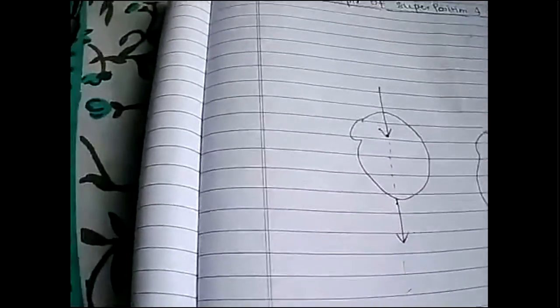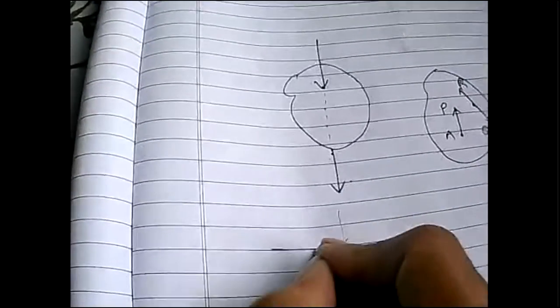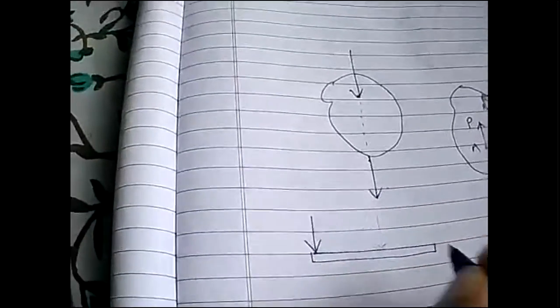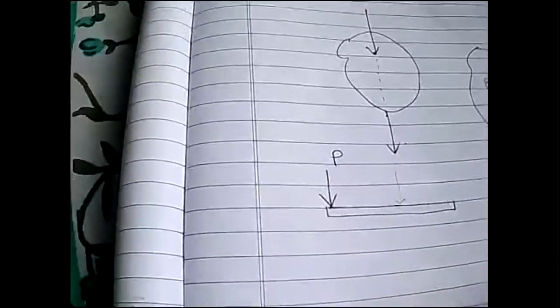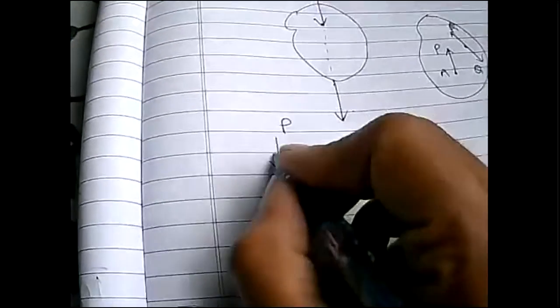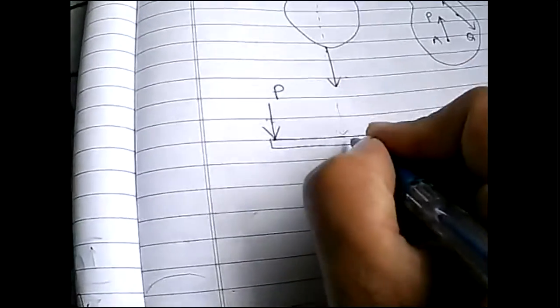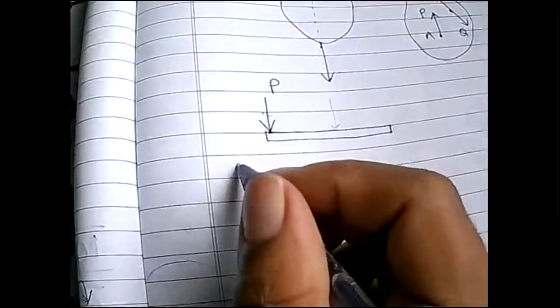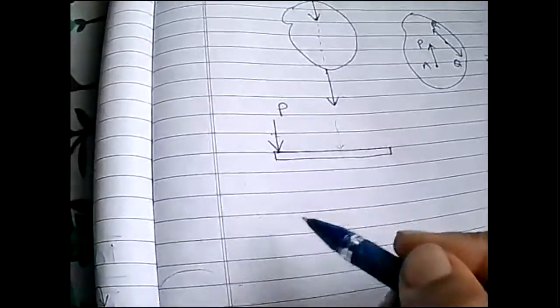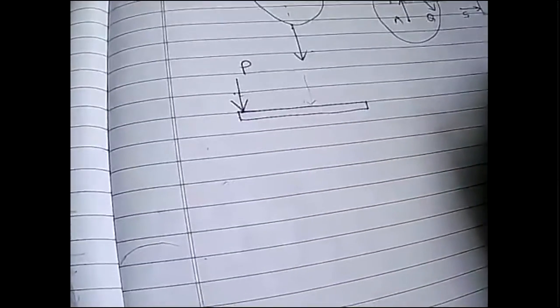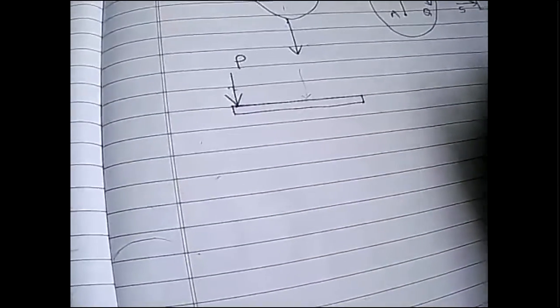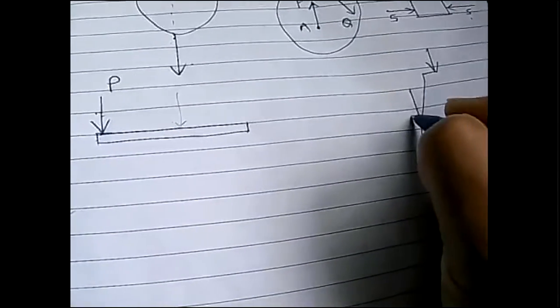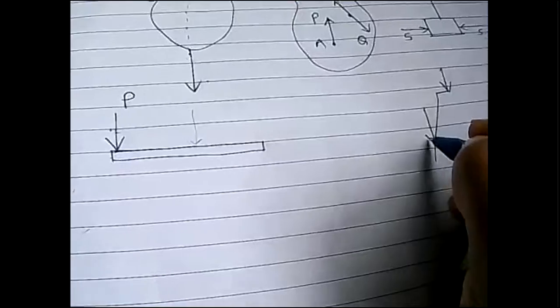We are going to use its application. If this rod is there, a load P is applied over here. But what I want is to transfer this load to this point because I am not able to reach this point. It is not easier for me to reach that point. If a hill is there, a load is acting and I am unable to reach there. So I can shift that load over here.